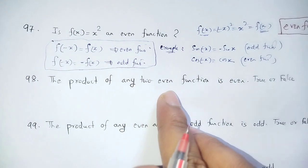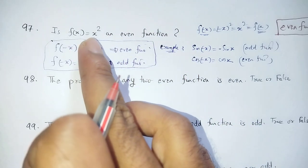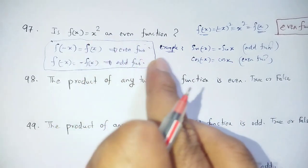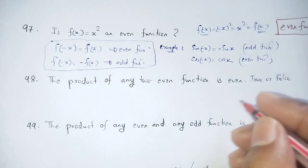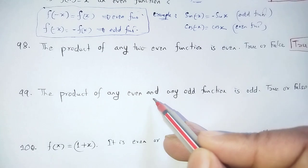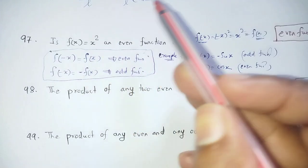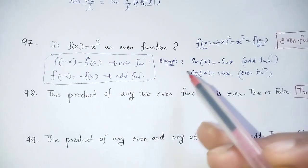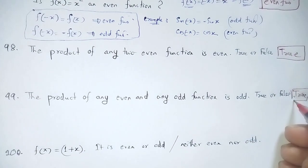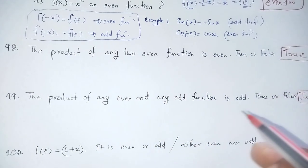The product of any two even functions is even. For example, x² is an even function and cosx is an even function, so x²·cosx is an even function. Similarly, the product of any even function and any odd function is odd. This is also true.